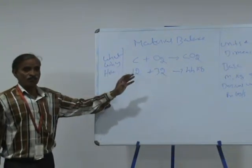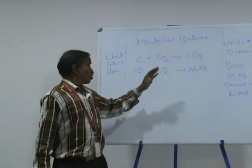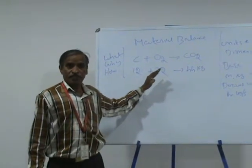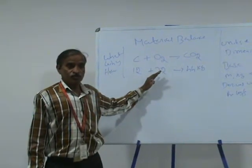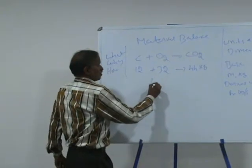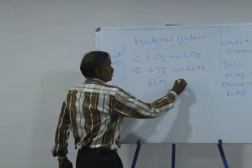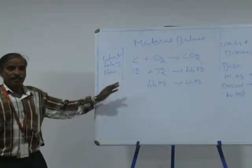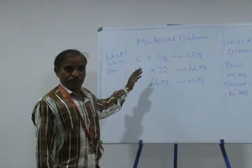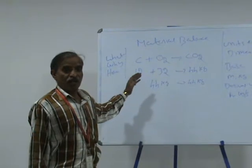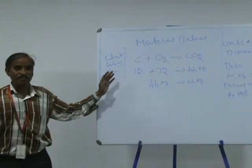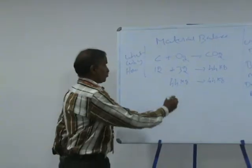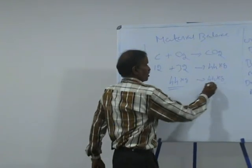So to produce 44 kg of carbon dioxide, I have to use 12 kg of carbon and 32 kg of oxygen. So total weight: I am taking 44 kg of raw material to produce 44 kg of product. There is a principle behind this stoichiometry — that is called the law of conservation of mass: mass neither can be created nor can be destroyed.